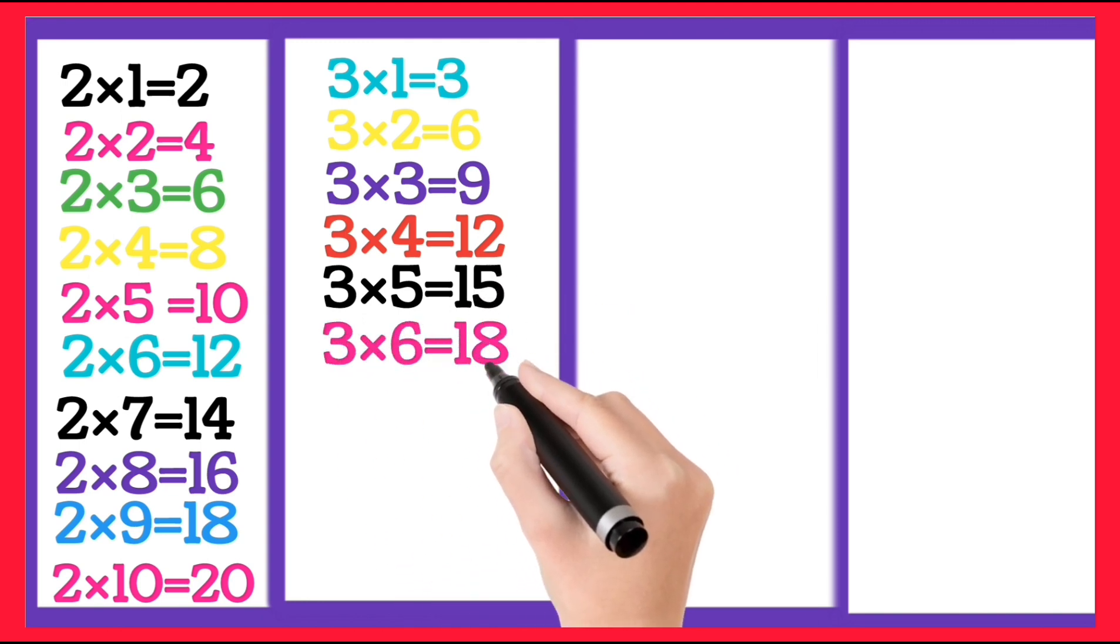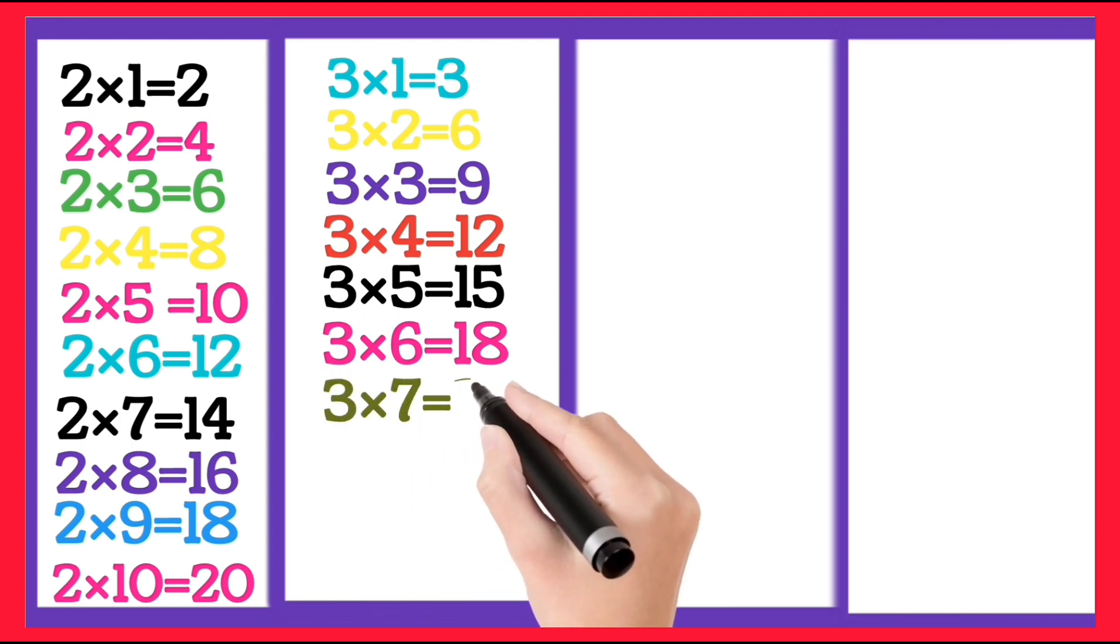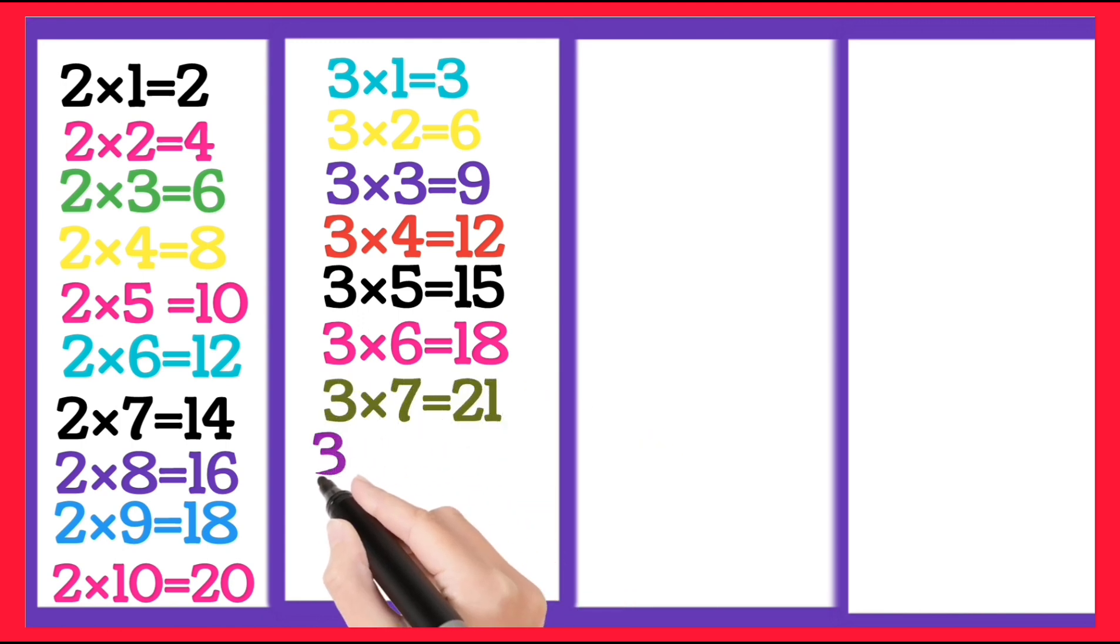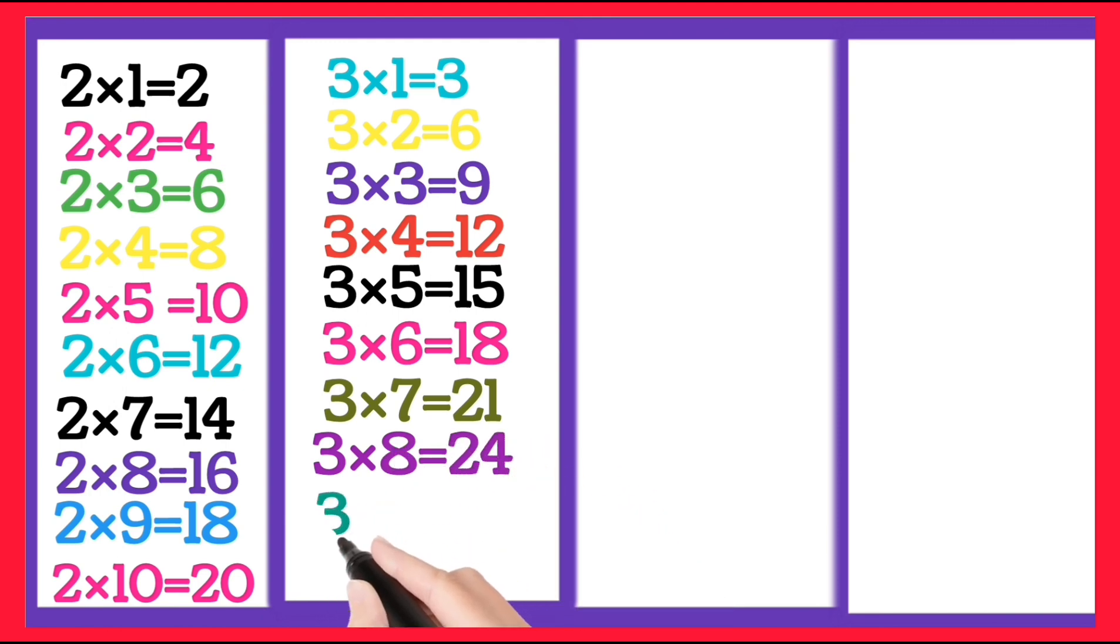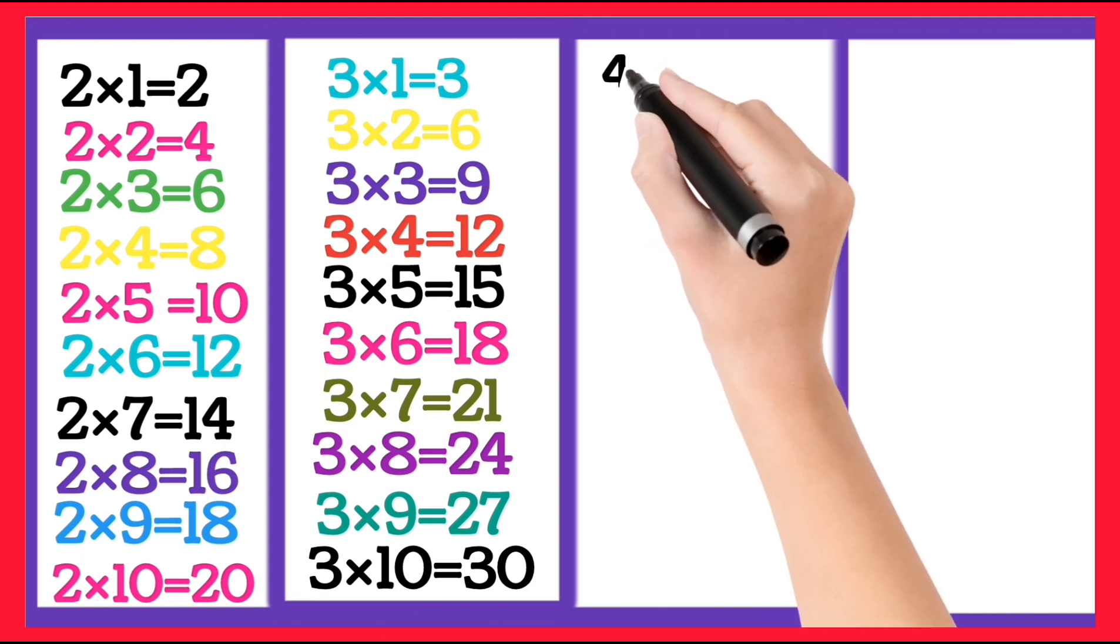3 6's are 18, 3 7's are 21, 3 8's are 24, 3 9's are 27, 3 10's are 30.